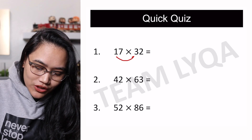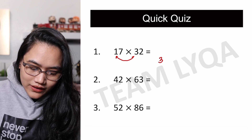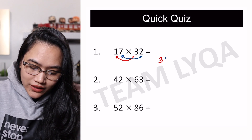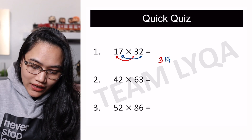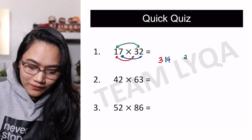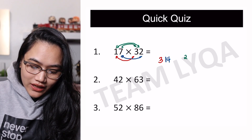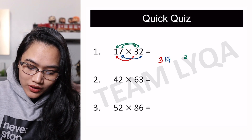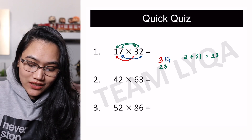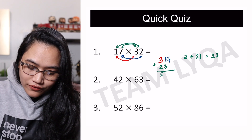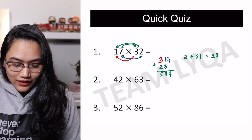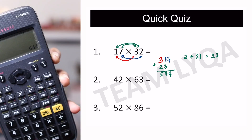So for 17 times 32: you have 1 times 3 which gives you 3, and then 7 times 2 which gives you 14. Outside: 1 times 2 is 2, set that aside. Inside: 7 times 3 is 21. So 2 plus 21 is 23. Add that in, leaving the last digit as is — we get 544. The answer is 544. Quick check: 17 times 32 equals 544.